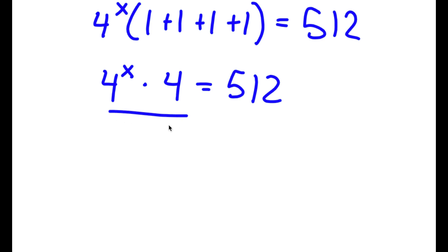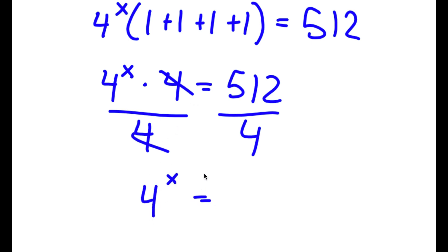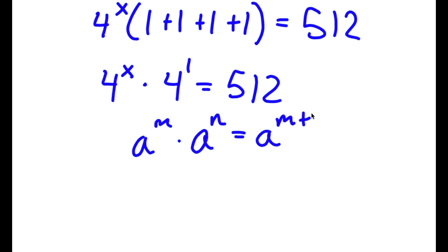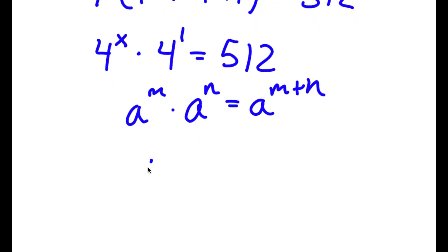Instead of dividing both sides by 4, I'm actually going to multiply these two. If I have something in the form a to the power of m times a to the power of n, this is equal to a to the power of m plus n. So 4 to the power of x times 4 to the power of 1 equals 4 to the power of x plus 1, which is equal to 512.